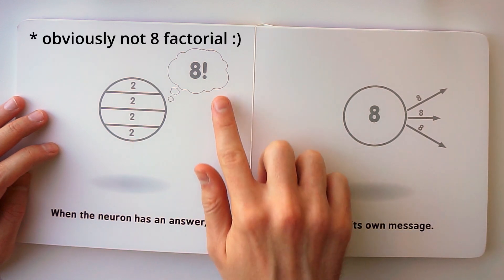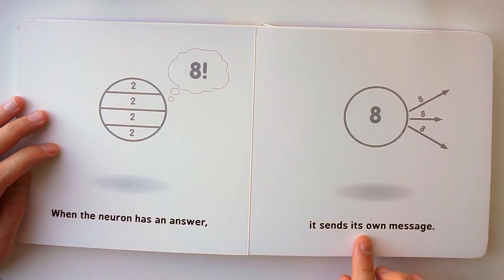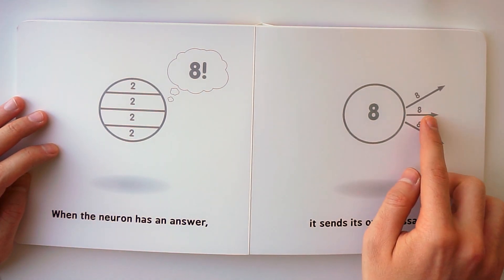When the neuron has an answer, eight, it sends its own message, eight.